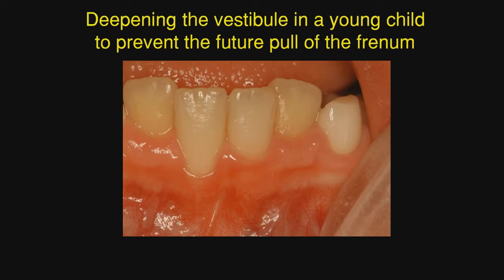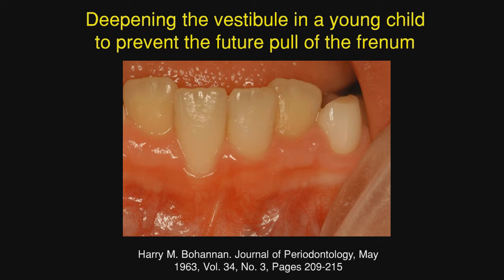However, there is a need for deepening the vestibule in a young child to prevent future pull of the frenum. We can see this central incisor is in facial version — there is no recession on that tooth, but there is an uneven gingival margin. When that tooth is moved lingually orthodontically, that soft tissue is going to rise. Bohannon did a procedure presented in 1963, referred to as the lead shot technique. Using a lateral film, he did a vestibular extension but did not expose bone. At the end of the procedure, he placed a lead shot and showed how much the vestibule had been deepened.